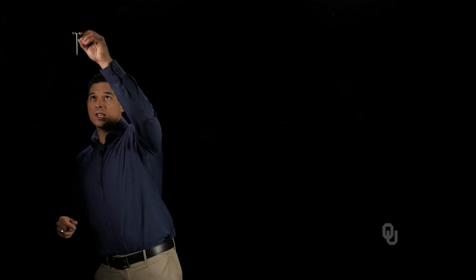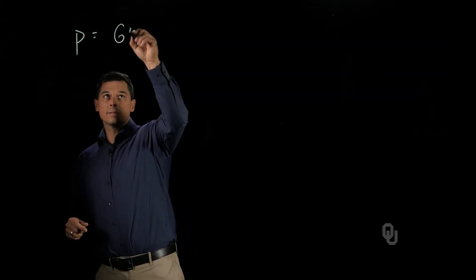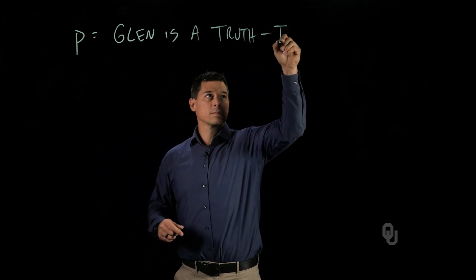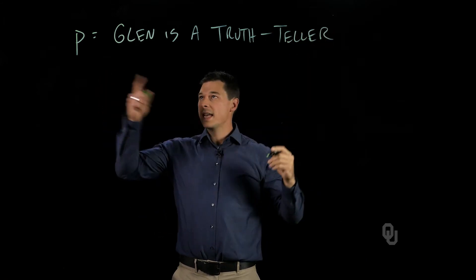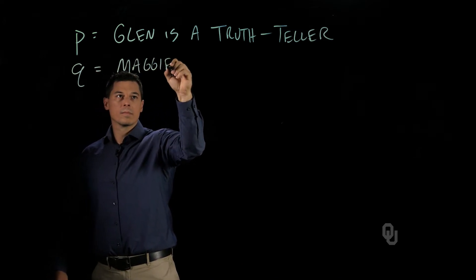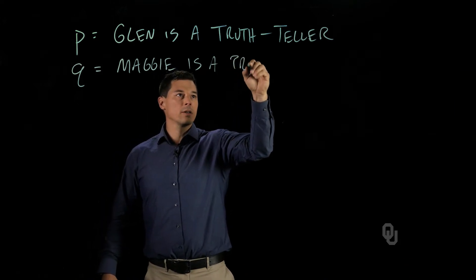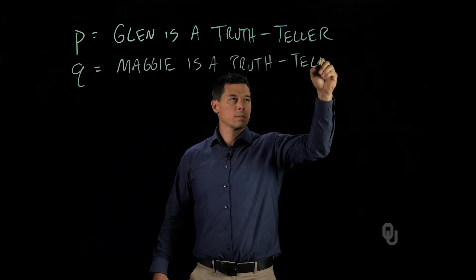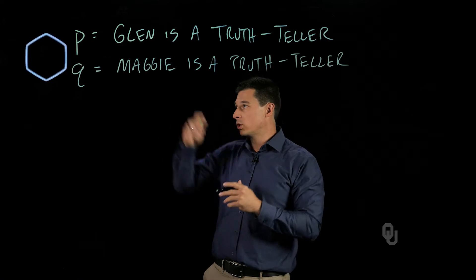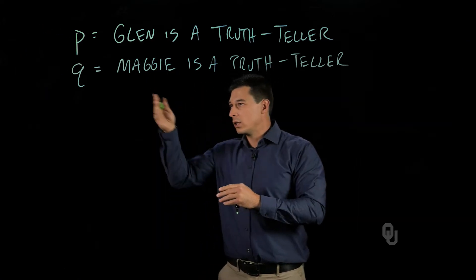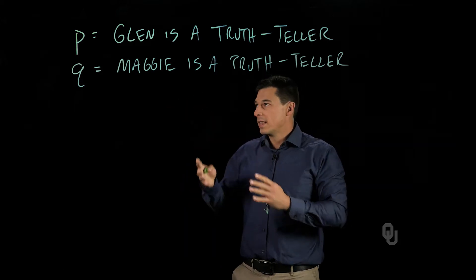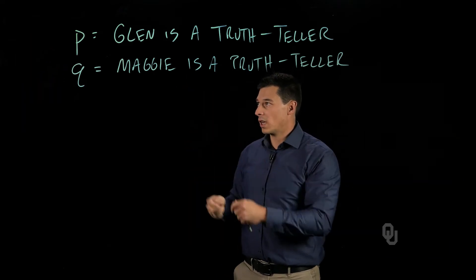Okay, so let's now think about this problem. In this case, we have a proposition. Proposition P is that Glenn is a truth-teller. Proposition Q is that Maggie is a truth-teller. A proposition is just any statement that has to be either true or false. So we have these two propositions, and what we want to do is evaluate what are all the possibilities that exist for these two propositions in this problem.